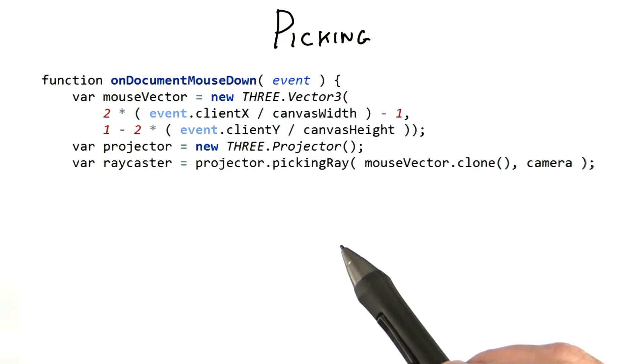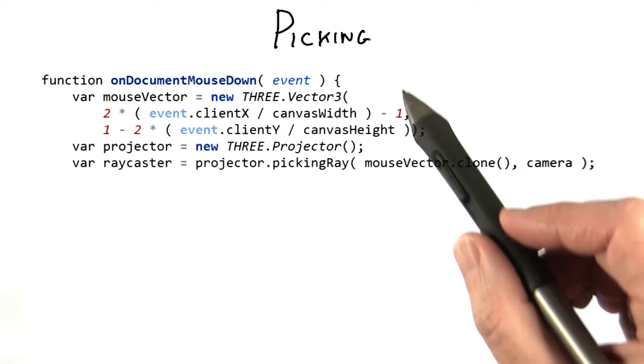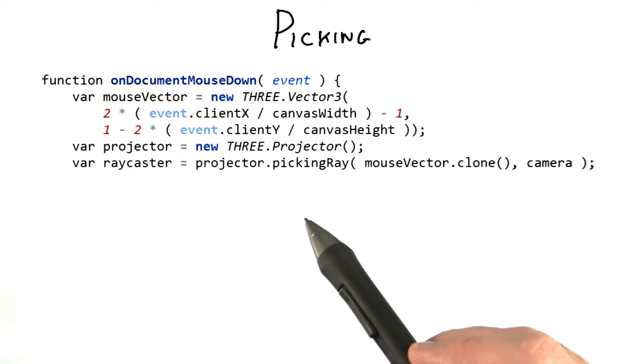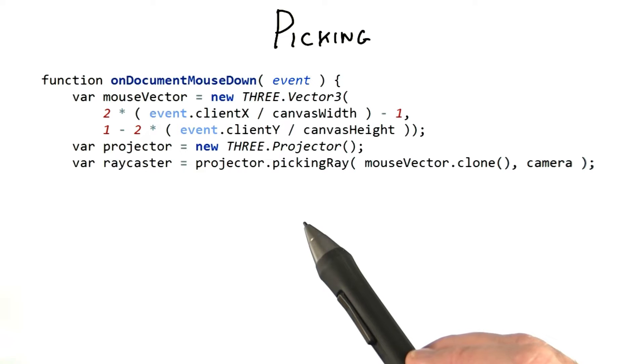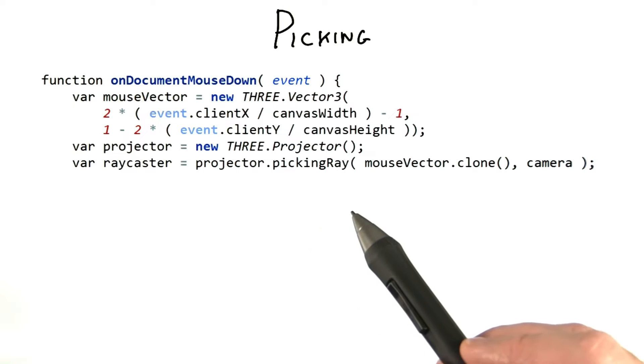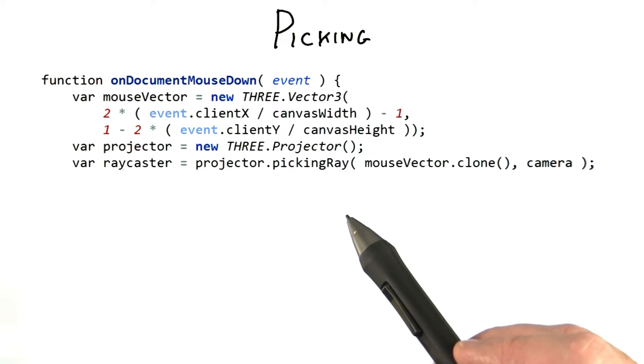The demo performed two separate actions: selecting the object clicked on, and if any object was found, then the object itself was modified and the point clicked on was highlighted.